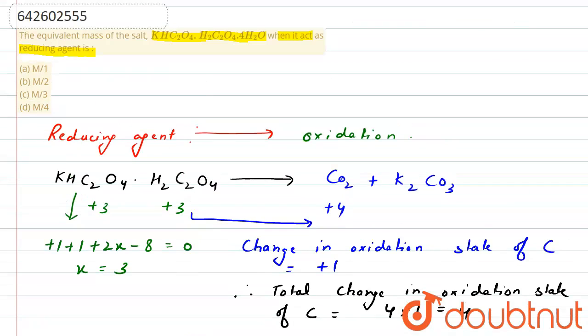Now, let's have a look at the options. Here, option D, M divided by 4 will be the correct answer. Okay? Thank you.